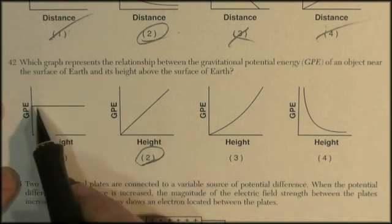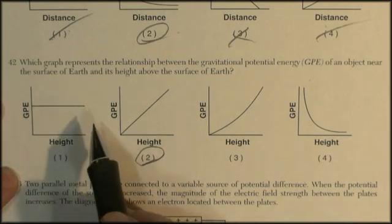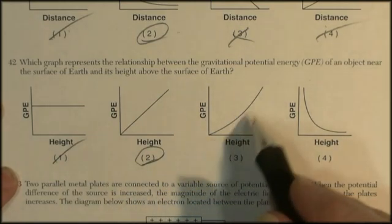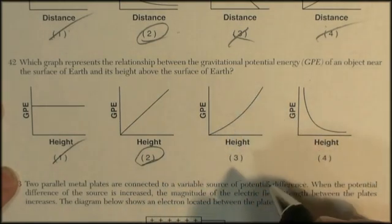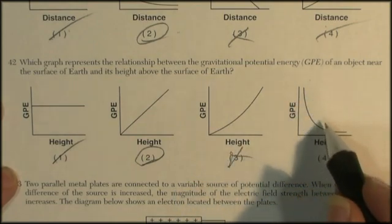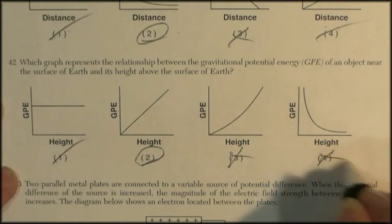1 says the potential energy stays the same regardless of the height. That's not right. 3 has got it going up, but it's got it going up exponentially. That can't be right. And 4 tells us the potential energy goes down as you get higher. That's not right.